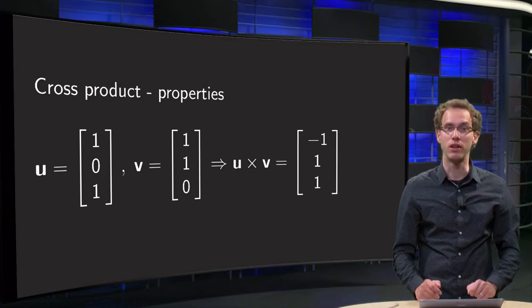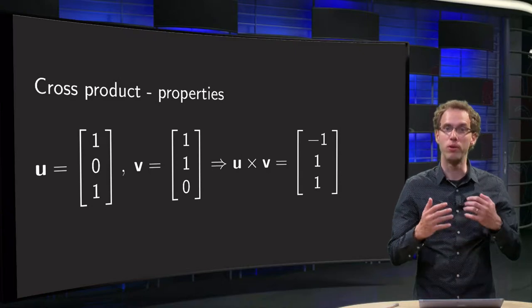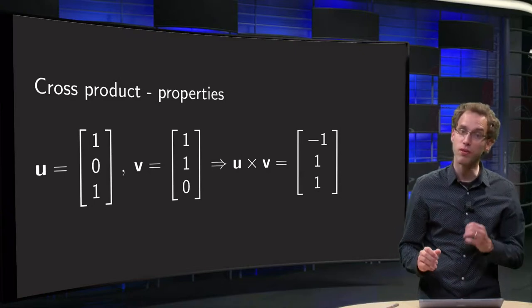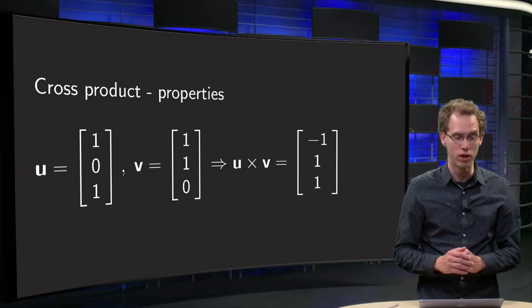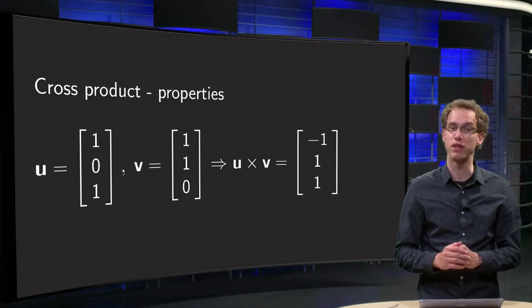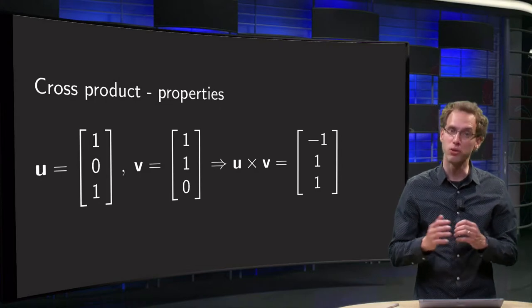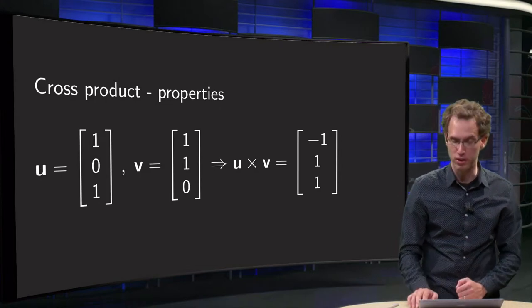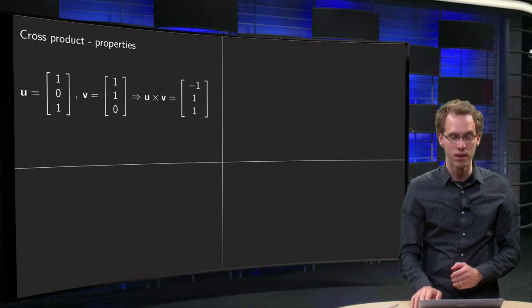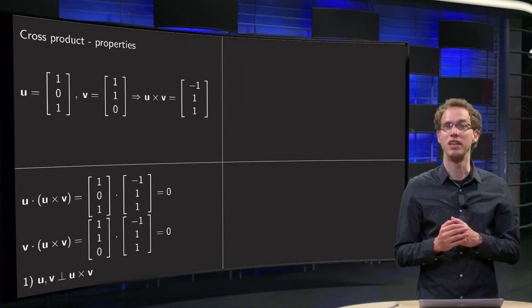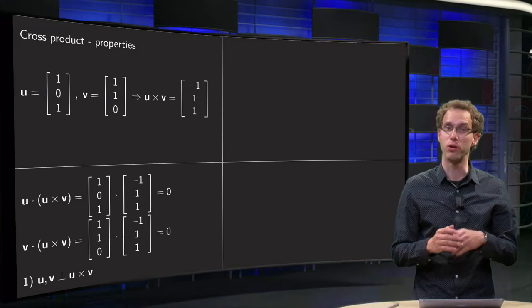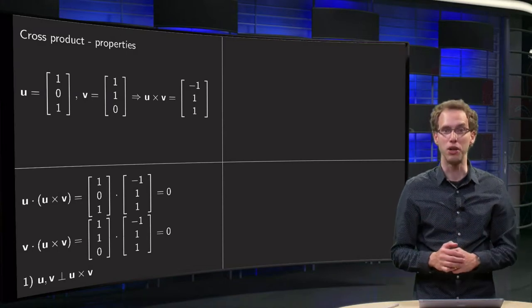Let us look at an example to show the properties. We have a vector u = [1,0,1] and a vector v = [1,1,0] and we can compute the cross product. You know how to do that, u cross v equals [-1,1,1]. And we will illustrate now a few of the properties of the cross product using this example.